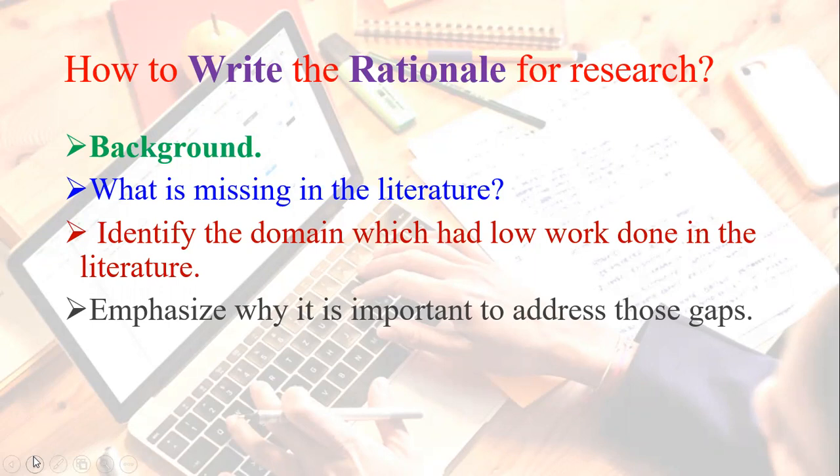After that, write what is missing in the literature. This is the gap which you are addressing. For example, in the literature, there is a variable named transformational leadership with four sub-factors. The lowest amount of work is on individualized consideration — there is little work and no variety of work on this sub-factor. You choose to opt for those for your study and neglect the other sub-factors which have the most work done. There is no need to study those. Identify the domain which has low work done in the literature. This is how you are addressing the gap.